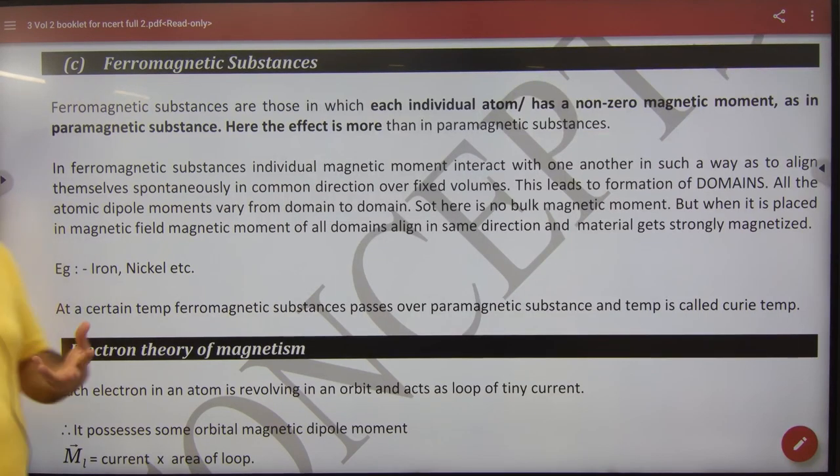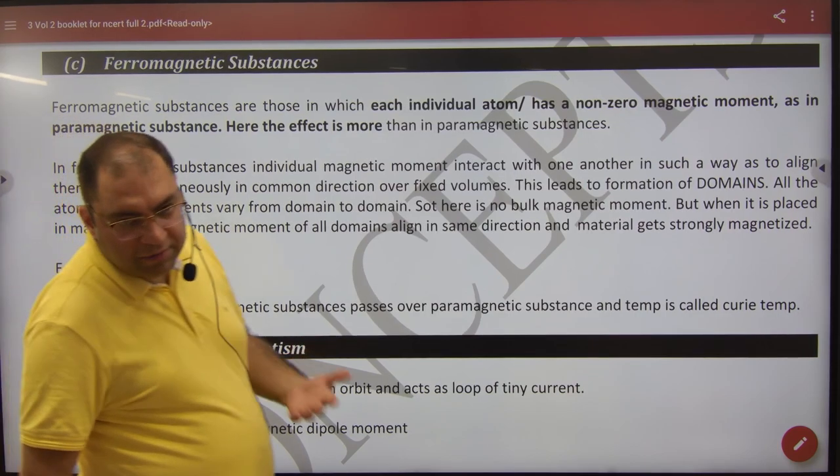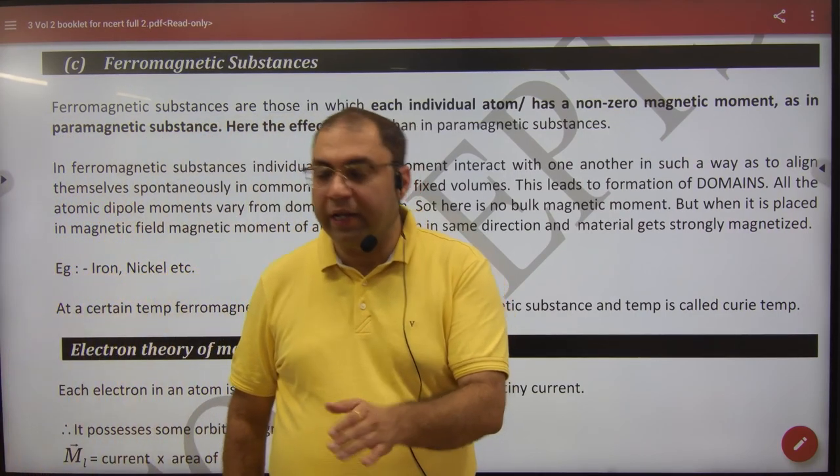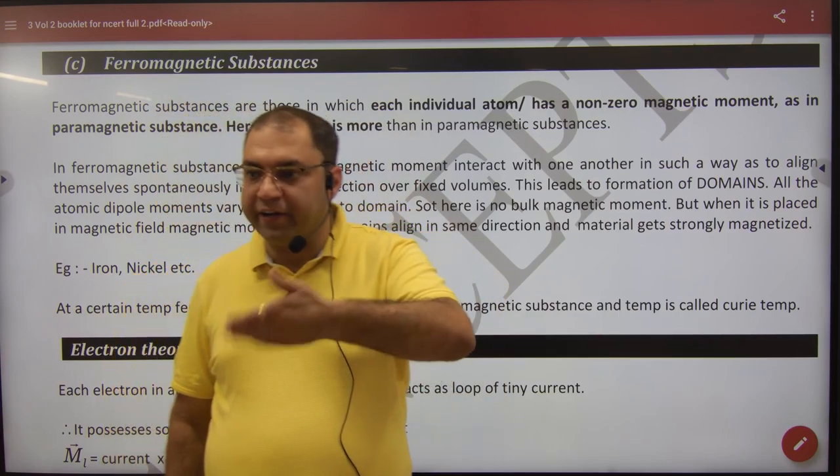Ferromagnetic substances, its properties are like para. But the difference is that para's atoms are magnets, but ferro's atoms are not just magnets, they are strong magnets. That means its effect is a little bigger.